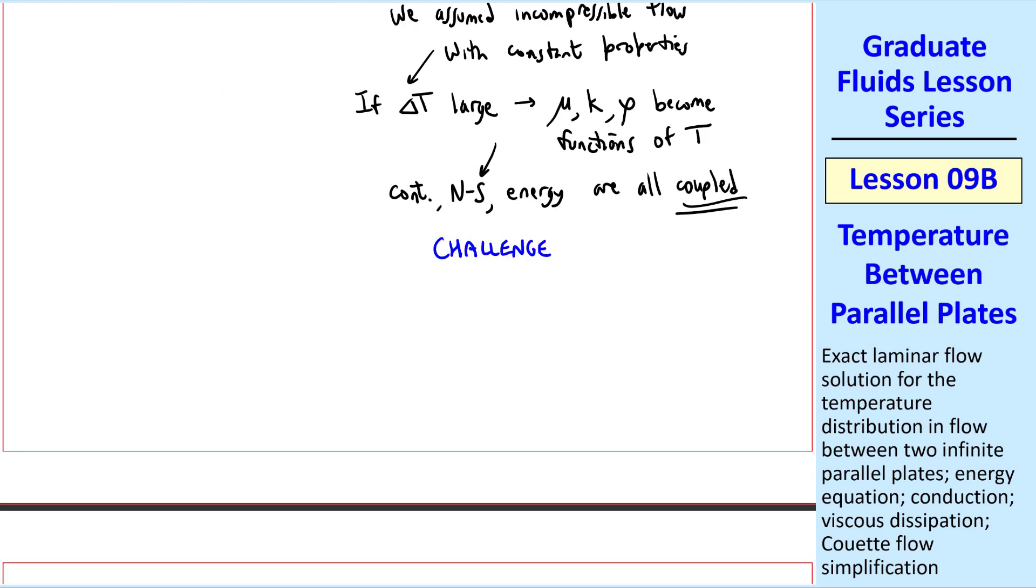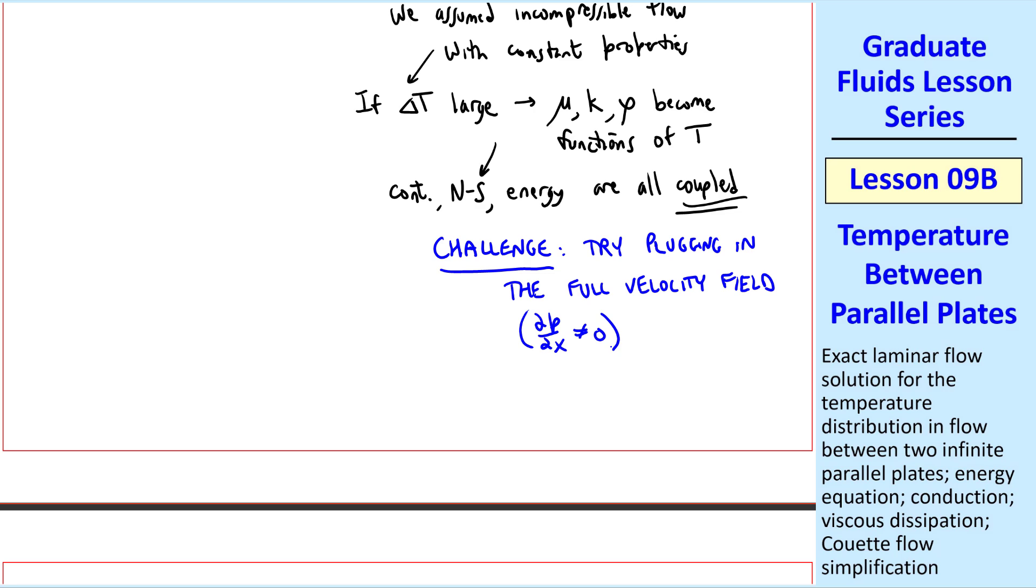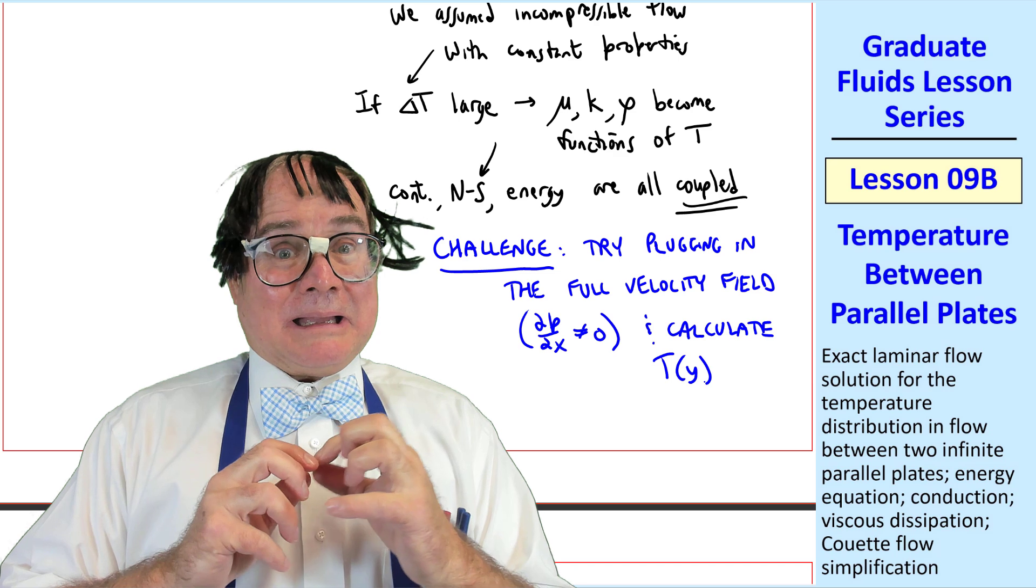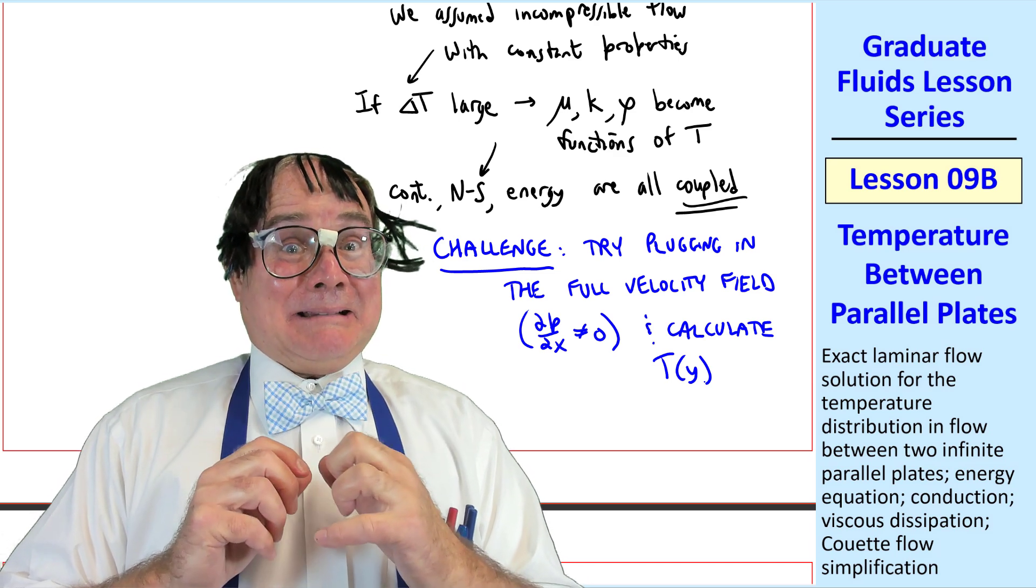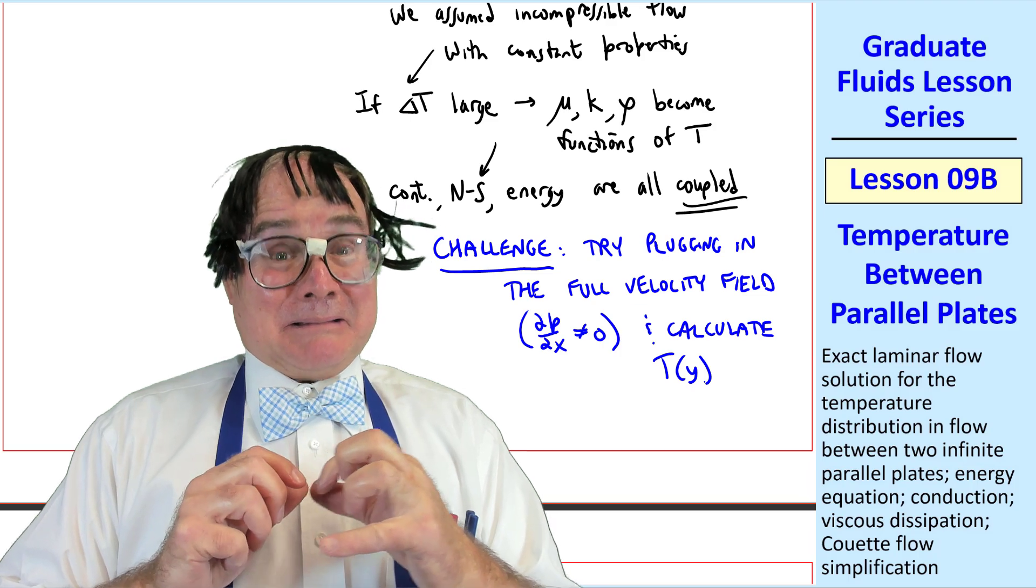Finally, here's a challenge for the students. Try plugging in the full velocity field, including the Poiseuille part, where del p del x is not equal to 0, and calculate T of y, the temperature field. That looks too hard for me. You can do it, Ned. You just need more confidence.